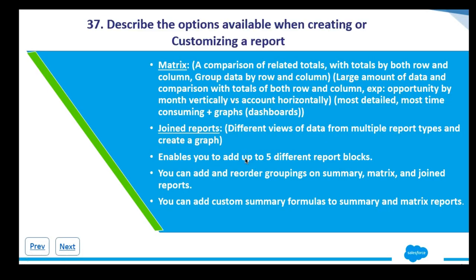The third format is a matrix report. A matrix allows you to do multiple groupings — summary reports are limited to two groupings, whereas a matrix report allows for many more. It also allows you to do comparisons by both rows and columns, and gives you the option to sort data by averages, sums, totals, and the like. Importantly, charts produced from matrix reports can also be used in a dashboard.